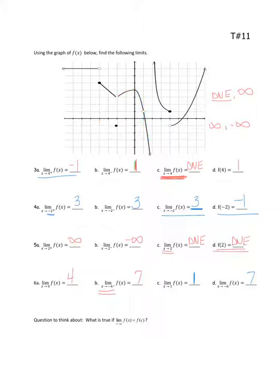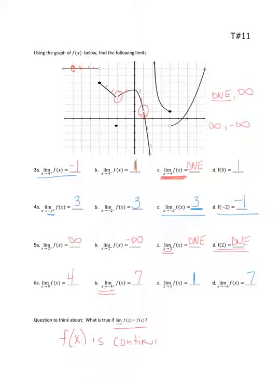Hopefully you came up with: all along certain parts of the graph, the limit and function values are the same. But where it's not true — here and here — I have a limit but it doesn't equal the function value. So if the limit equals the function value, then f(x) is continuous. That's an O — continuous at x equals c. If the limit equals the function value, then you know you're at a continuous point of the graph. Remember continuity involves holes, jumps, asymptotes, that sort of thing.